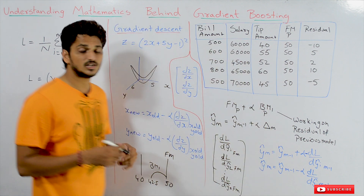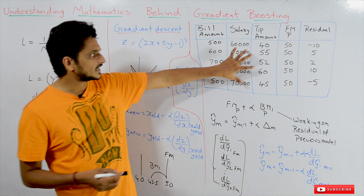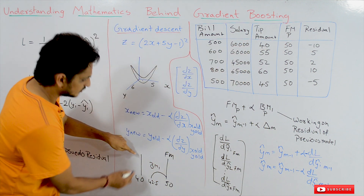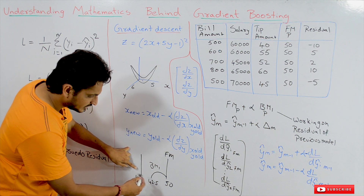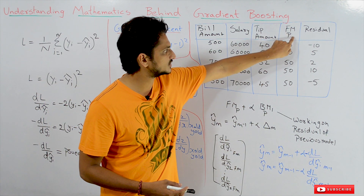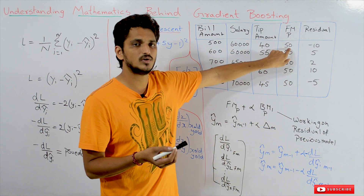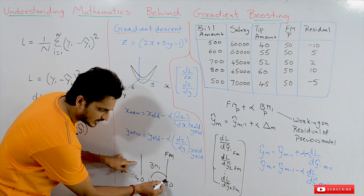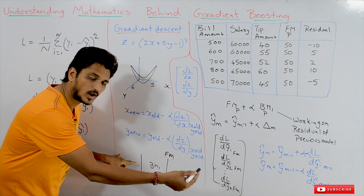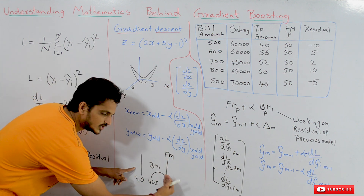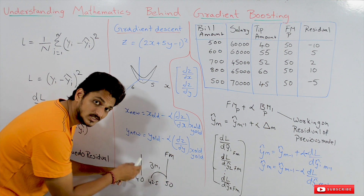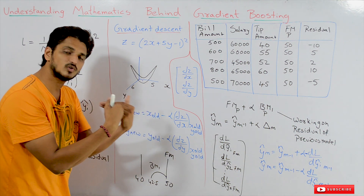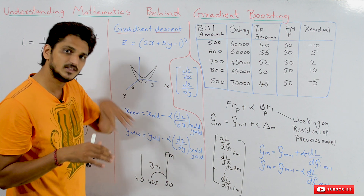Coming to today's class — in our last class, we worked with a dataset on gradient boosting. We take the first point where the actual value is 40. Initially, we added our prediction from our first model, taking the mean value as the predicted value: 50. When we added the first model prediction of 50, and then added one more base model, we moved in the direction towards the actual value. That is what we discussed in our last class. But why we are moving in the direction towards the actual value — that we will understand mathematically in this class.